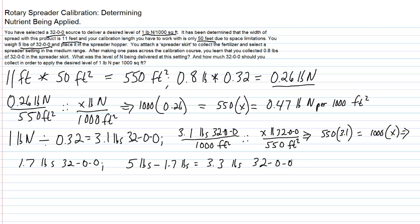If you did not have anything to collect and weigh it, you'd put five pounds in and you keep adjusting every time, making sure it's five pounds, until you finally get to where you are applying 1.7 pounds over the 550 square feet calibration area. So those are calculations that will help you in determining how to calibrate a rotary spreader to deliver a desired level of nutrient.